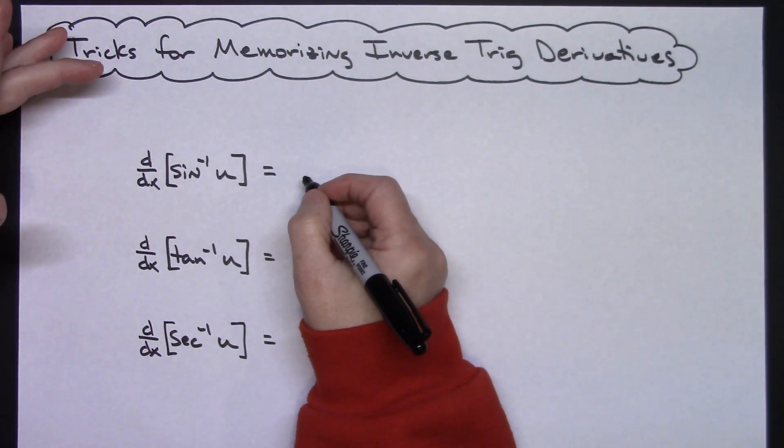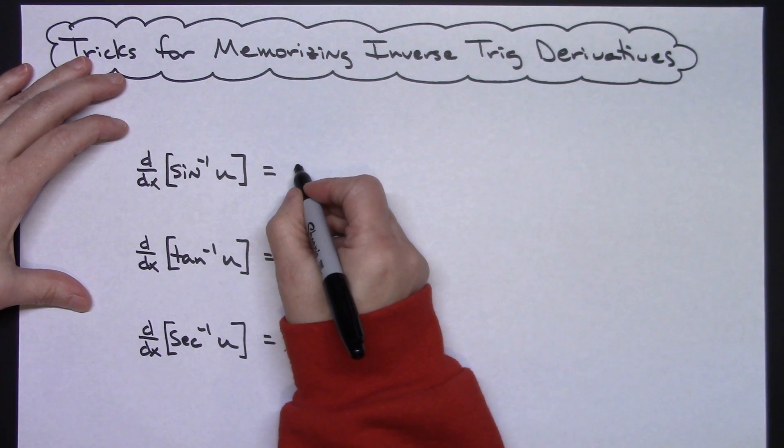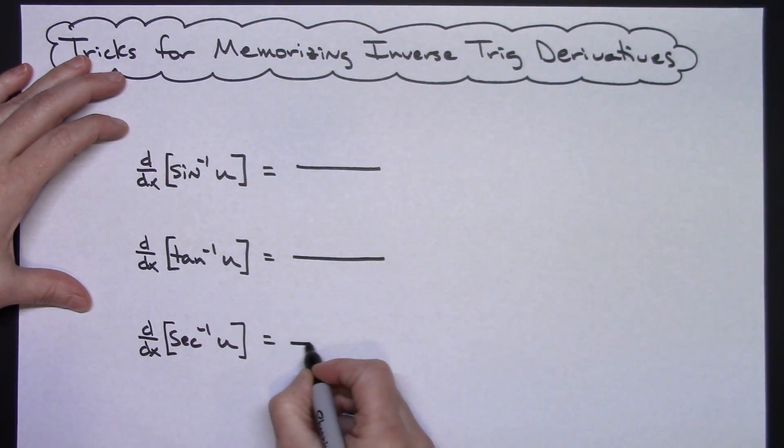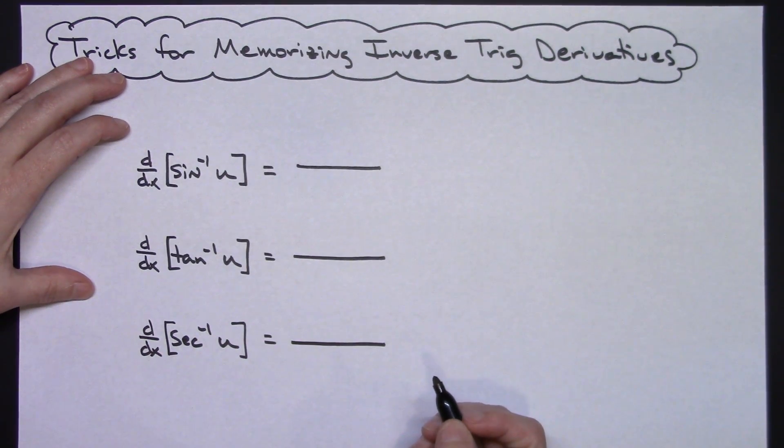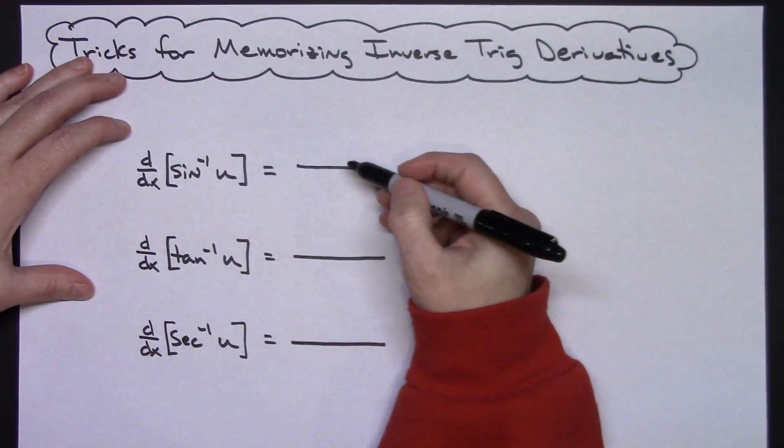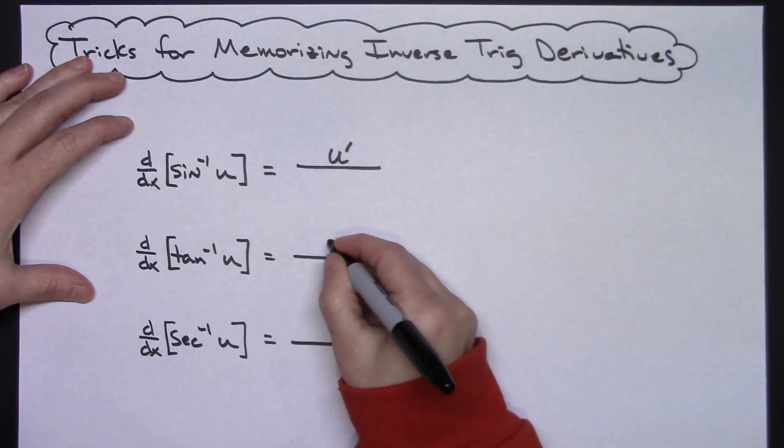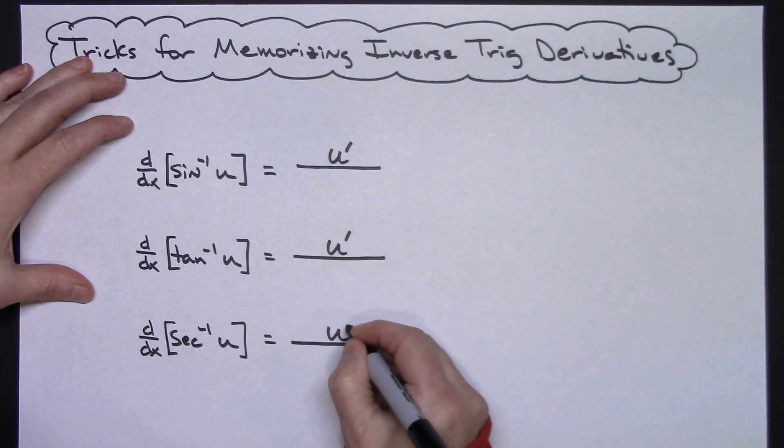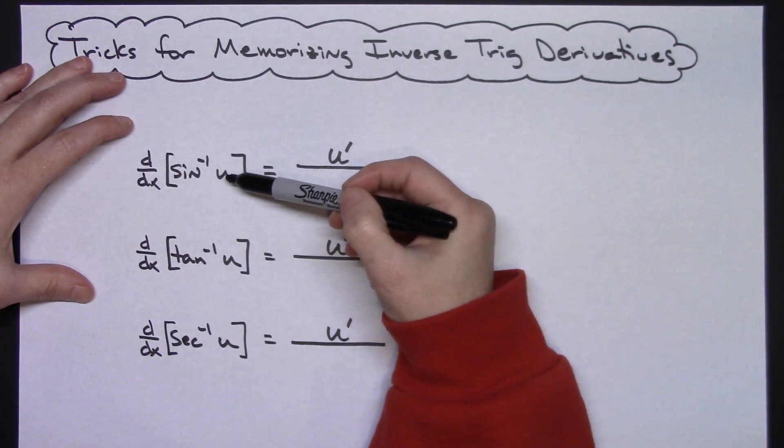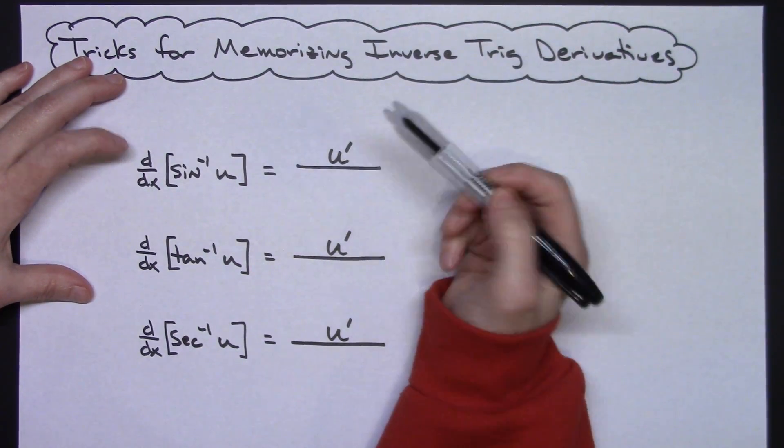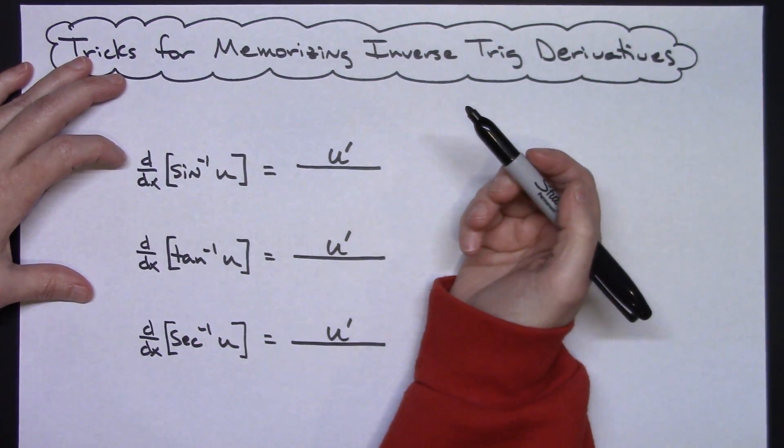Now all of the inverse trig derivatives are quotients, so I would go ahead and put a quotient in for each one of them because I know that that's going to be needed. All the numerators are the same, so that's easy to memorize: U prime, U prime, and U prime. I probably do need to make note here this U is a function in terms of X, so then we're definitely going to have that chain rule in there, so there's one of the U primes coming from.